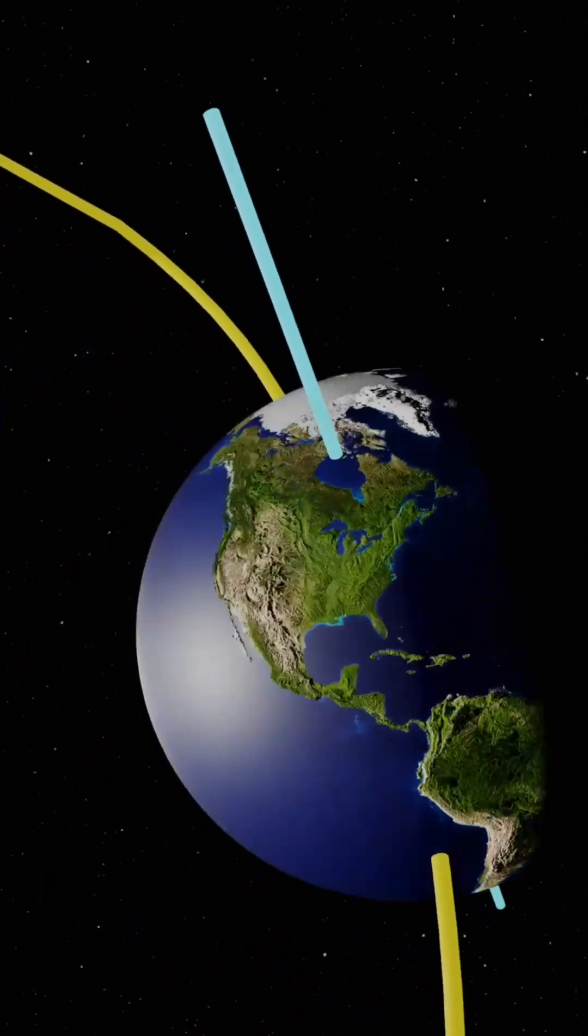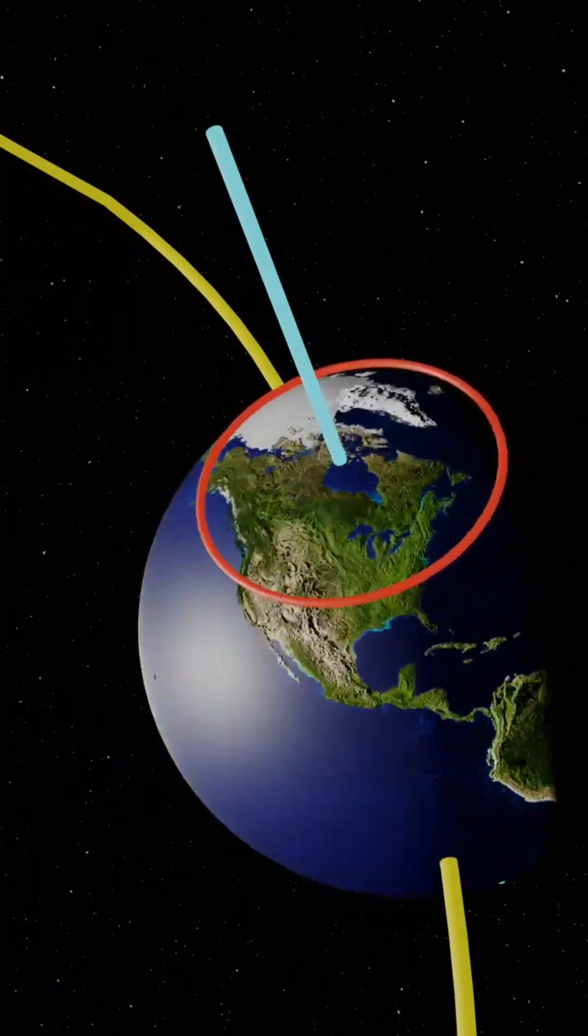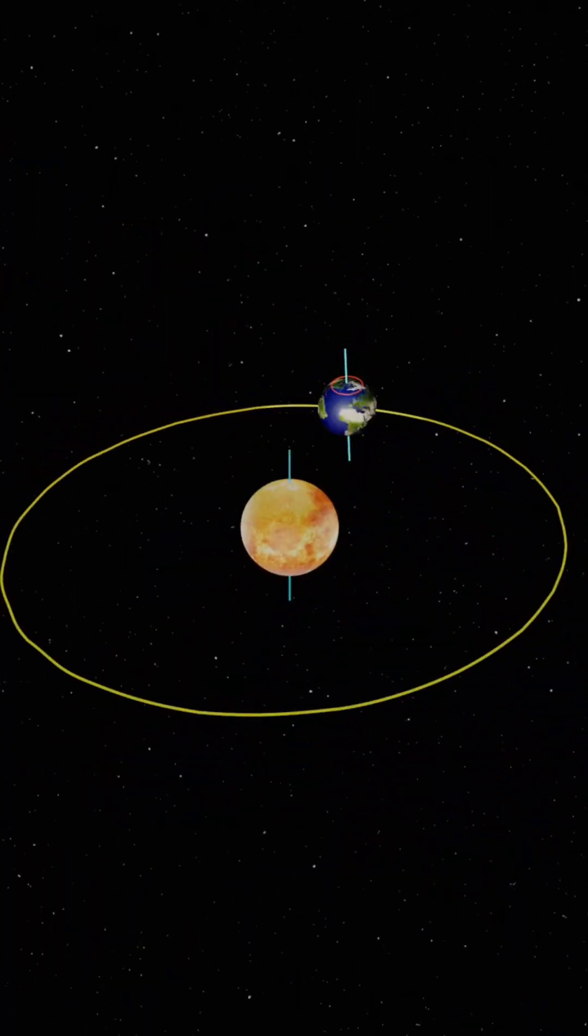Now when the earth rotates with this tilt, you can see where this circle is made. There is 24-hour light in this part. The night is getting rough here.